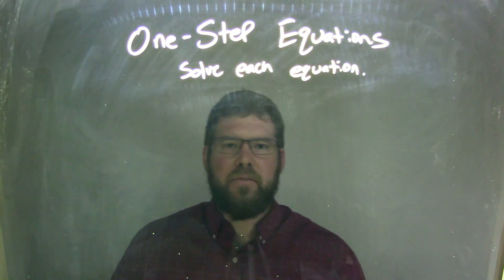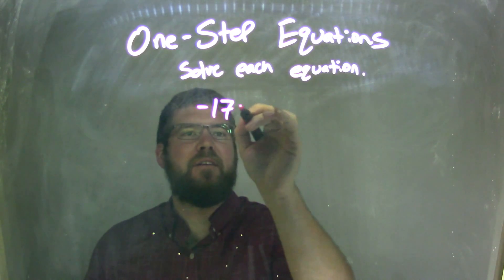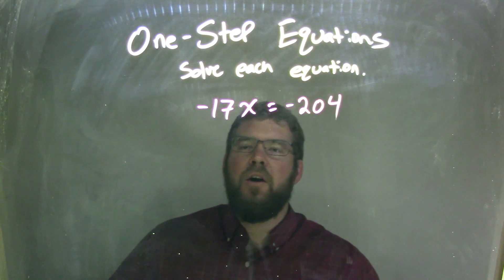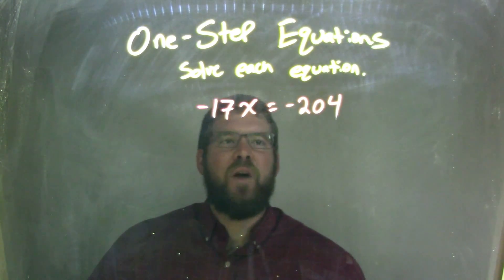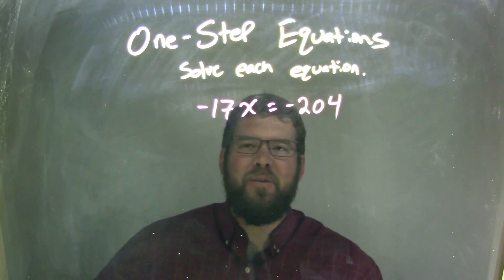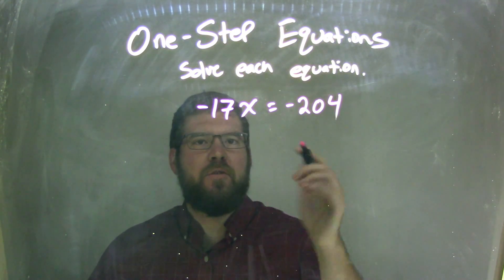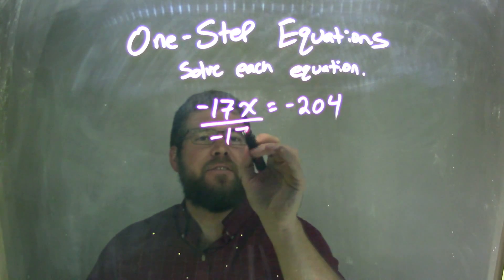So, if I was given this equation, negative 17x equals negative 204. Well, that's multiplication right here, right? So I got ahead of myself. Opposite of multiplication is division, so I'm going to divide both sides by negative 17.